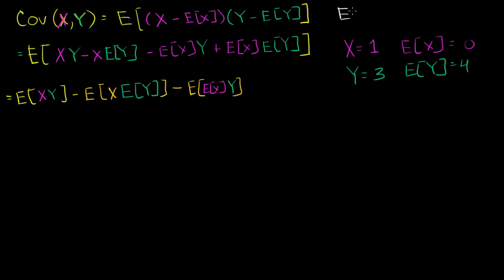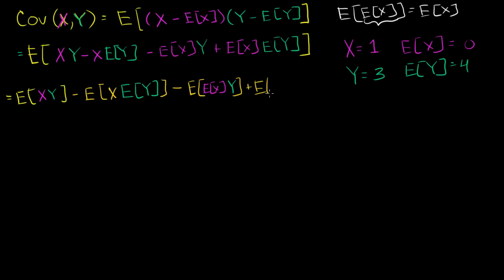Let me write this to remind ourselves: the expected value of the expected value of x is just the expected value of x. You can view this as the population mean for the random variable — it's just a known number out there in the universe, so the expected value of it is just itself. If the expected value of x is 5, then the expected value of 5 is 5, which is the same thing as the expected value of x.